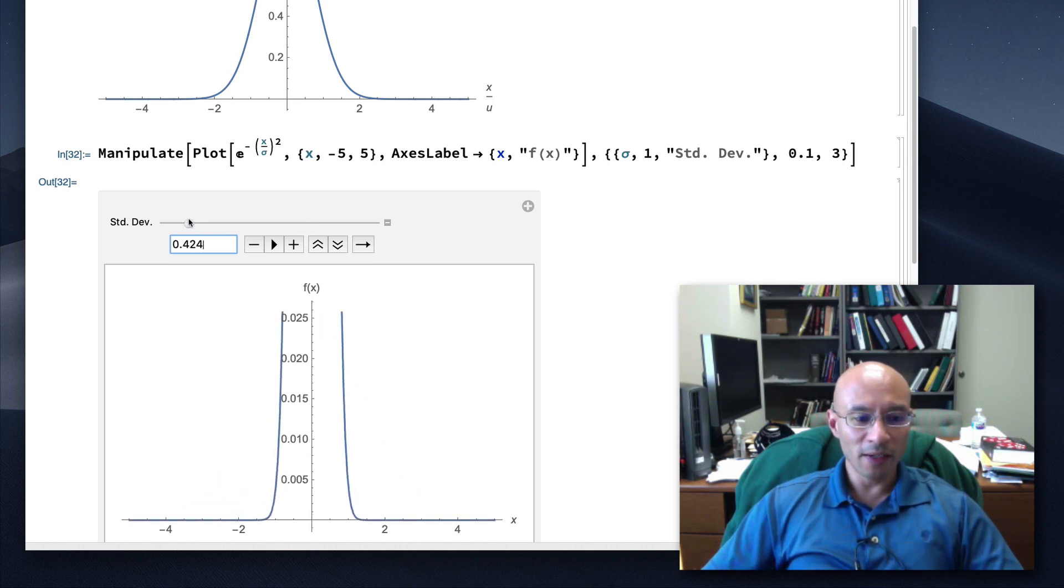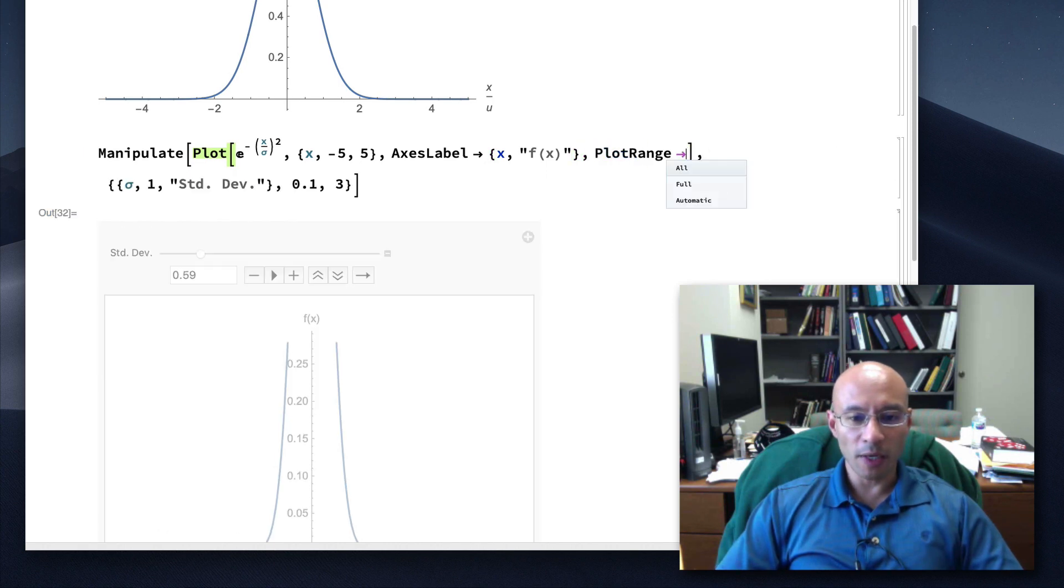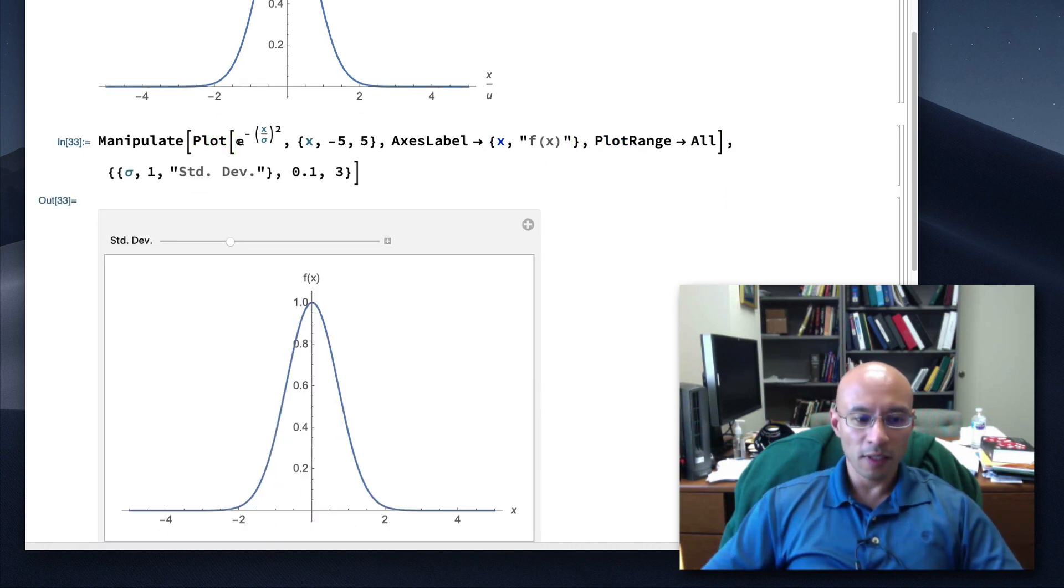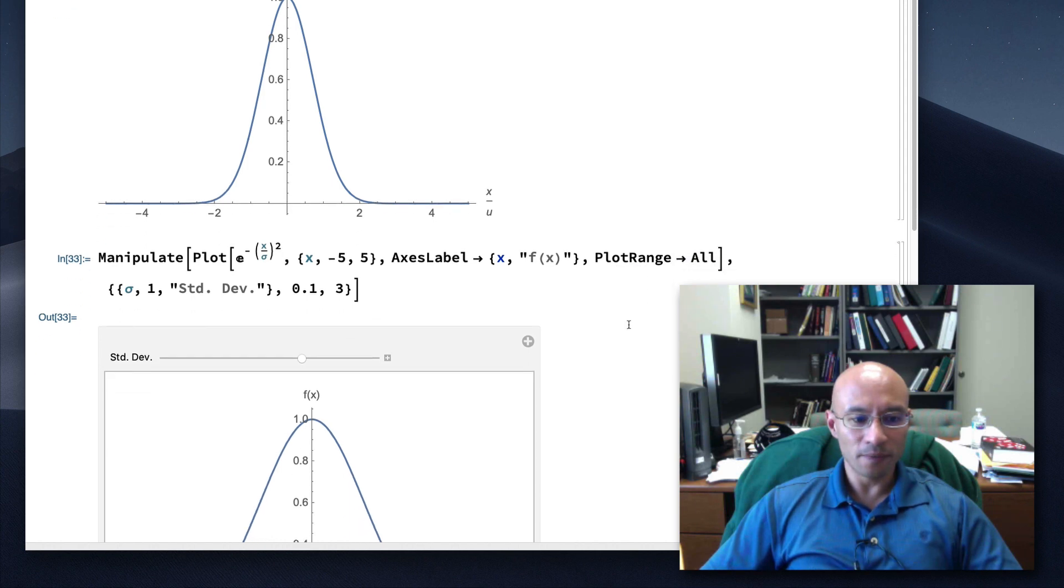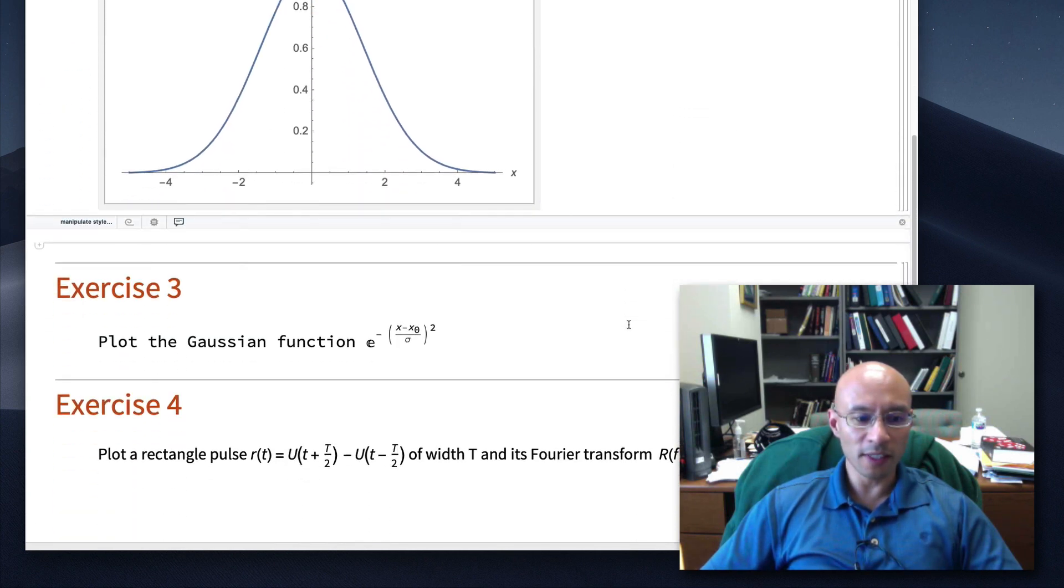Now one thing to point out is when we get down here, the Gaussian goes beyond what the screen is showing me. So one way to do that is in the plot command, so here's the plot command, I'm going to give it a new argument, plot range, all. And so it makes sure that all the data is shown on the axes. Okay, so we've achieved exercise two, and let's go on to exercise three.